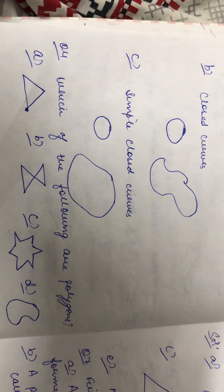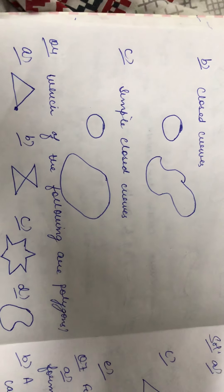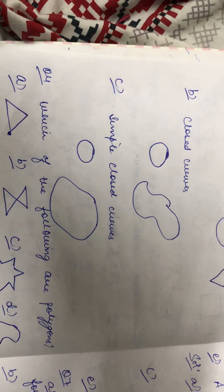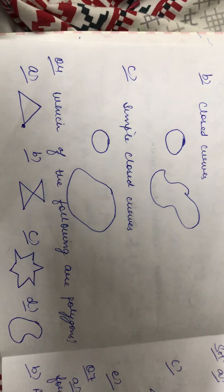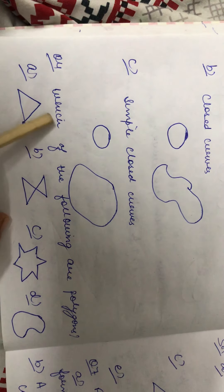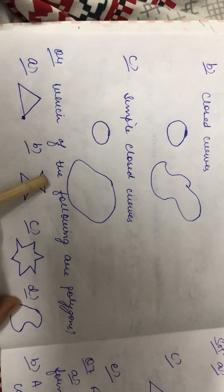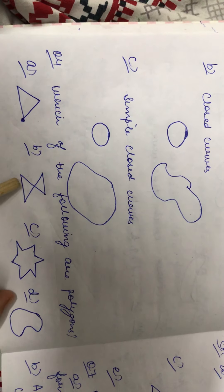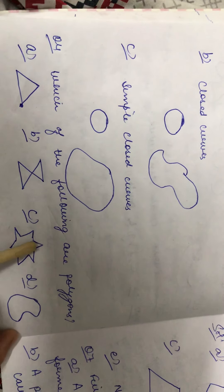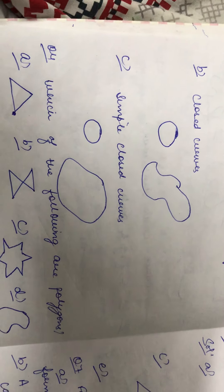Now the fourth question is: which of the following are polygons? A polygon is a figure made up entirely of line segments that don't intersect each other. In the A part we have three line segments and they don't intersect, so A is a polygon. In B the lines are intersecting, so it is not a polygon. In the C part again it is a polygon because it is not intersecting and made up entirely of line segments.